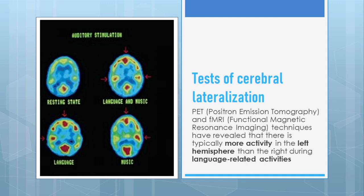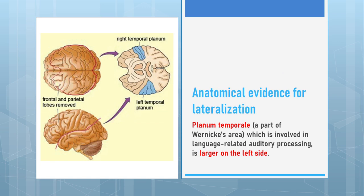There are evidences for lateralization of cerebral function. Imaging techniques like positron emission tomography and functional magnetic resonance imaging reveal that there is more brain activity in the left hemisphere than the right hemisphere during language-related activities. Similarly, when listening to music, there is more activity in the right side of the brain. There is also anatomical evidence: the planum temporal, which is part of Wernicke's area and is concerned with language comprehension, is larger on the left side of the brain — indicating that the left brain is more concerned with language-related cognitive functions.